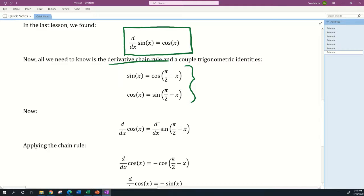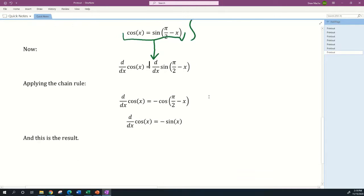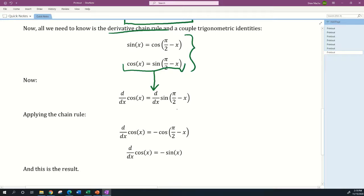Now let's take the derivative of both sides. We'll apply the chain rule to the right side, which means we take the derivative of the outside function, which is sine. The derivative of sine is cosine, and we keep the inside the same. Then we multiply that by the derivative of the inside function. The derivative of this constant is zero, and the derivative of negative x is negative one, and that's where this negative sign comes from.